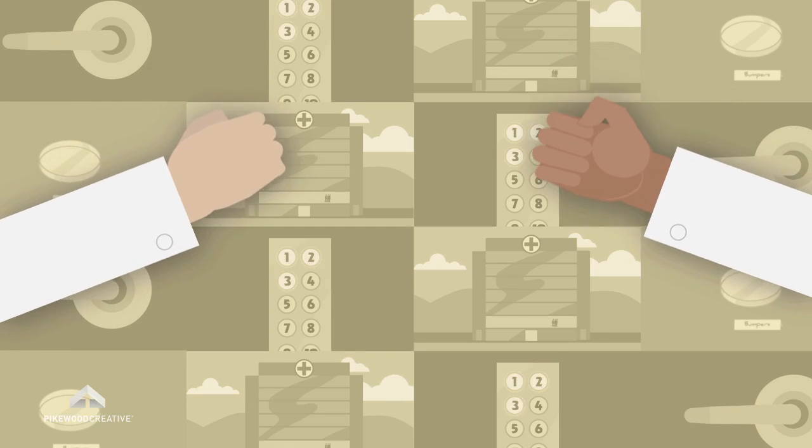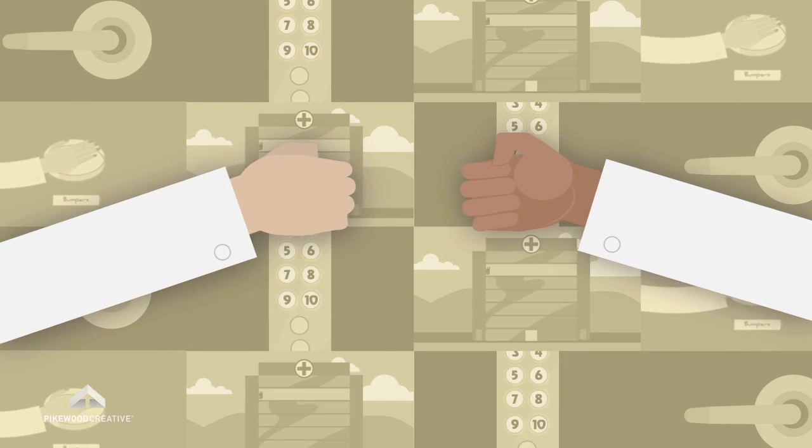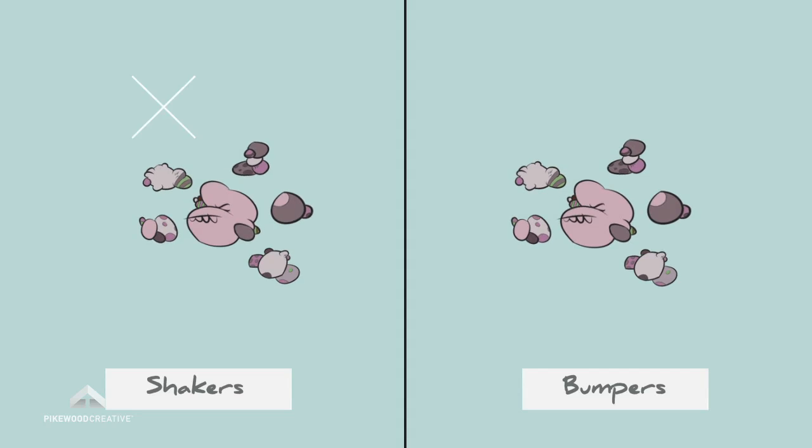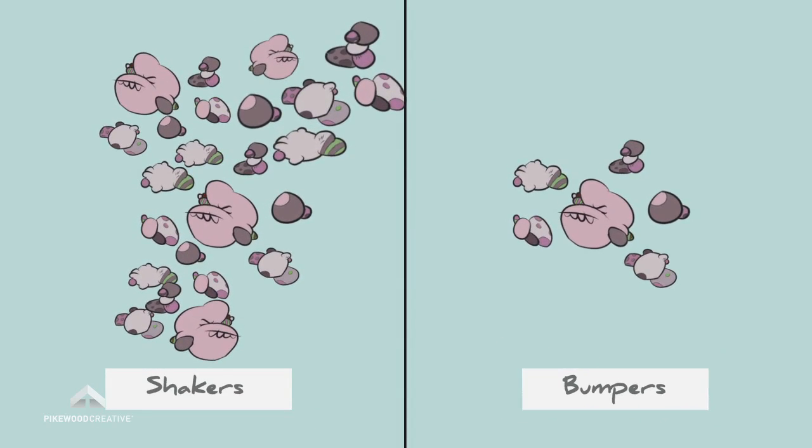Then, they repeated the entire process, but this time, instead of handshakes, they fist bumped. We found that the growth after 72 hours of incubation of bacteria on the handshakers was four times greater than that on fist bumpers.